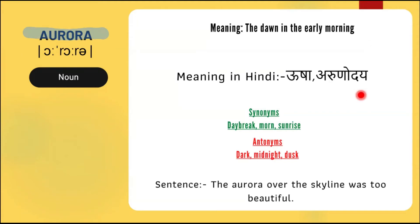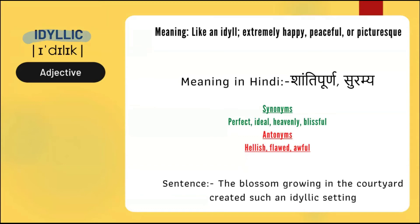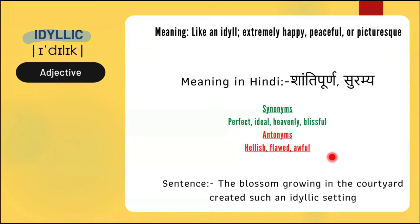The next word is 'idyllic', meaning extremely happy, peaceful, and ideal. The synonyms for 'idyllic' are perfect, ideal, heavenly, and blissful, while the antonyms are hellish, flawed, and awful. Example sentence: 'The blossoms glowing in the courtyard created such an idyllic setting.'